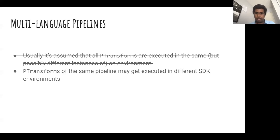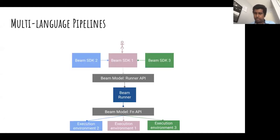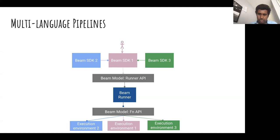With multi-language, PTransforms of the same pipeline may get executed in different SDK environments. Instead of one Beam SDK, you have multiple SDKs. You'll always have one SDK for submission, but that SDK connects to other SDKs to build the pipeline. It creates the standard portable definition and submits it to the runner. The runner uses the Fn API to connect to different execution environments — now multiple environments instead of one — and starts up multiple execution environments to actually execute the pipeline.